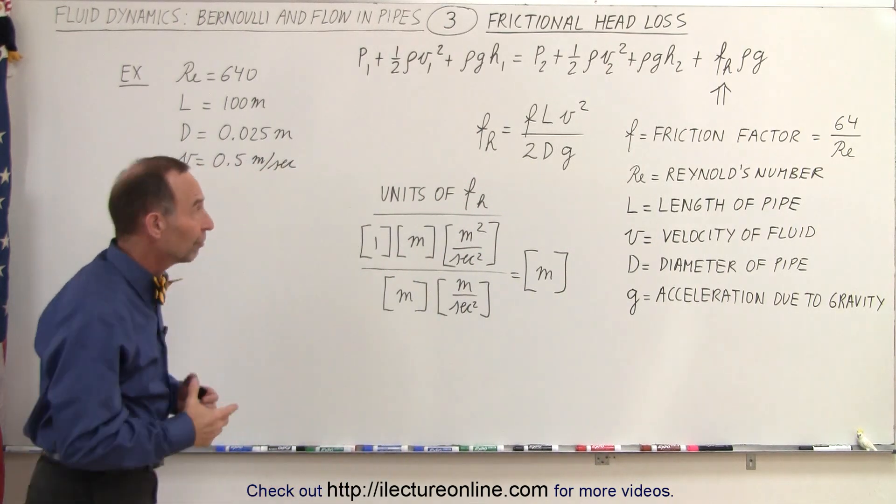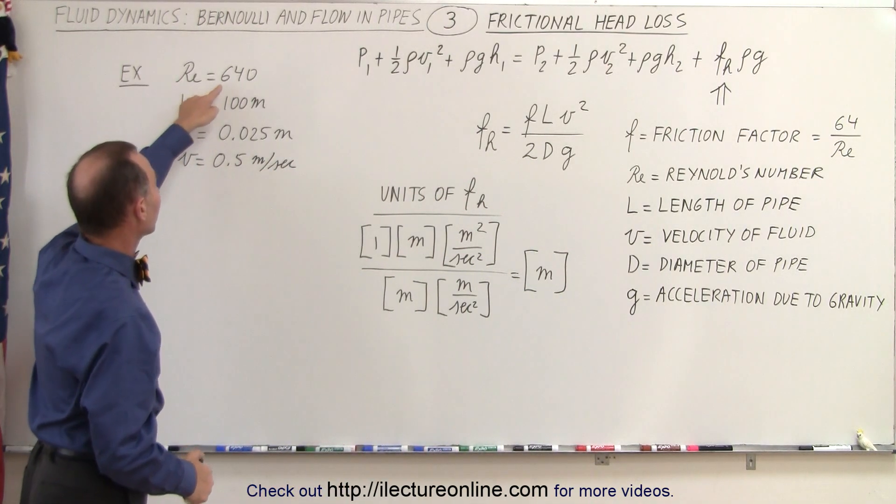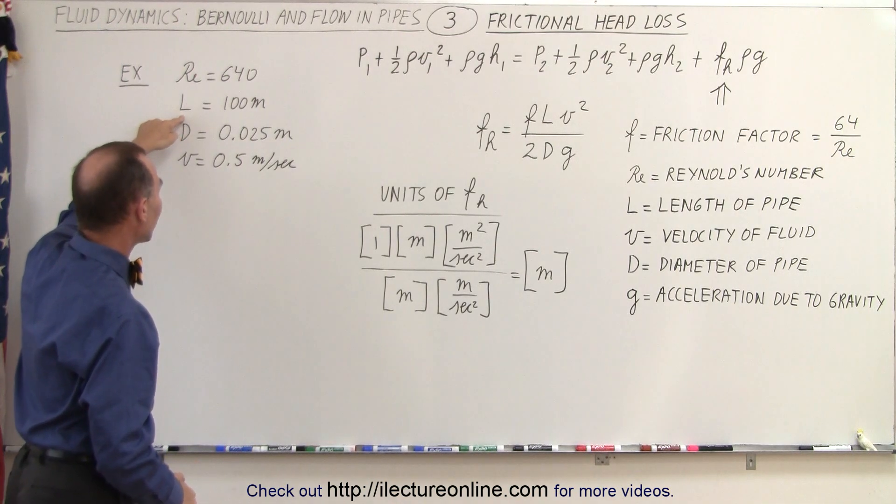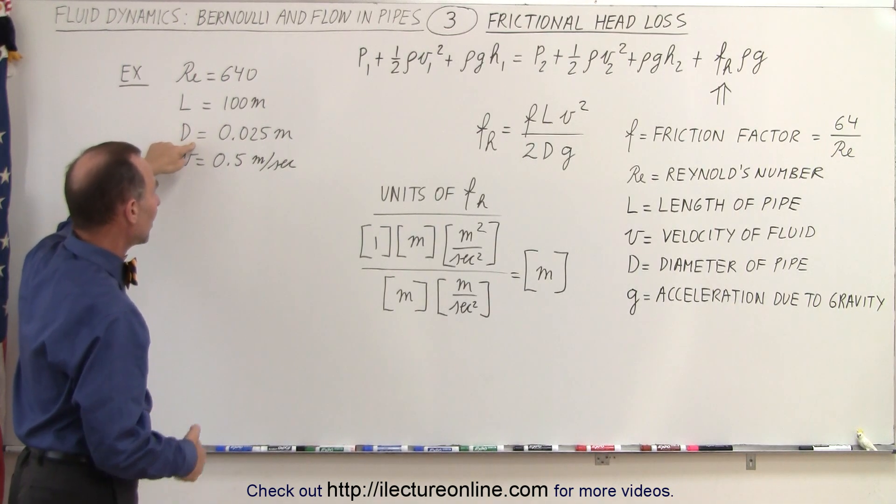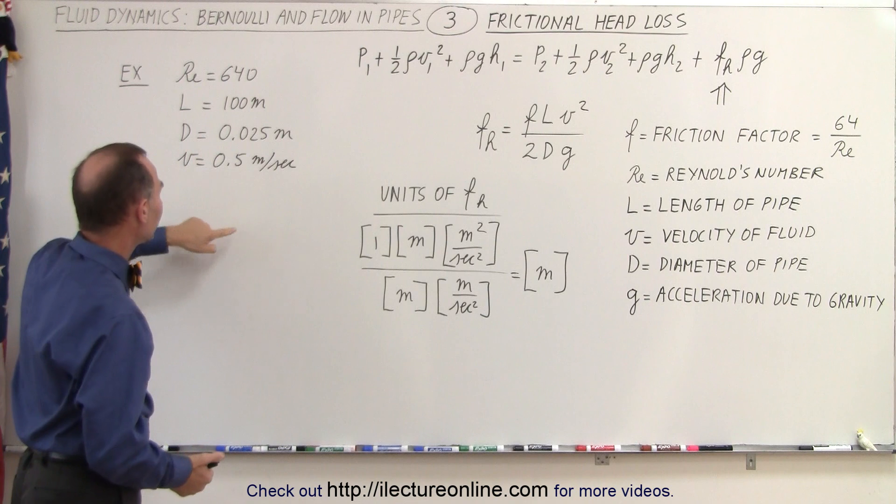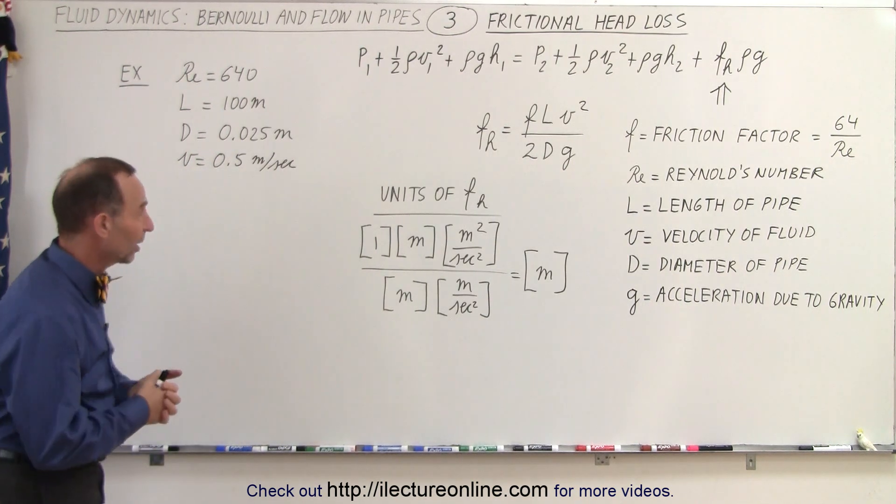So how would you calculate the frictional head loss? Well, let's assume that we have a Reynolds number of 640, a length of pipe of 100 meters, a diameter of about 1 inch which is 0.025 meters, and a velocity of 0.5 meters per second.